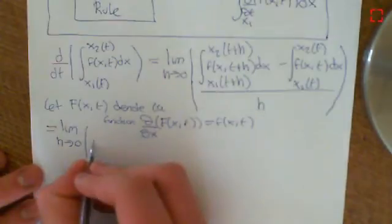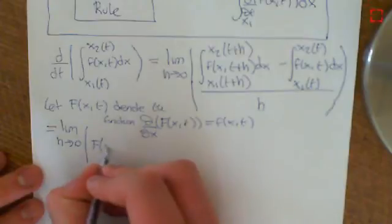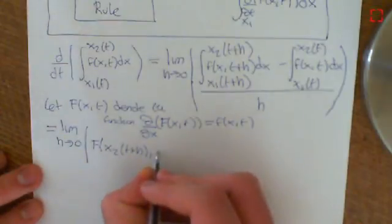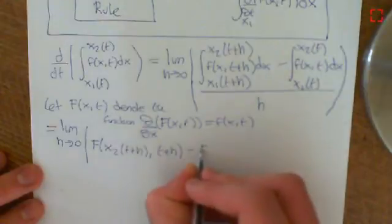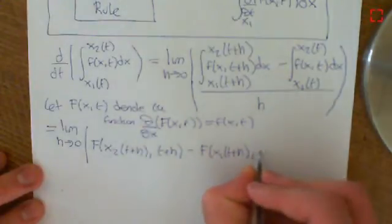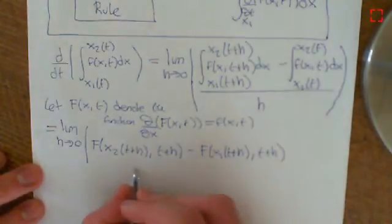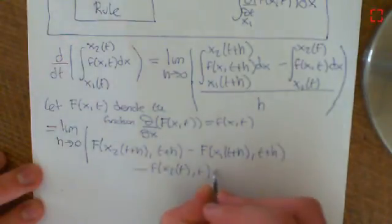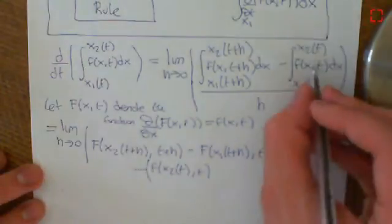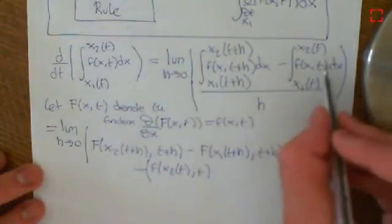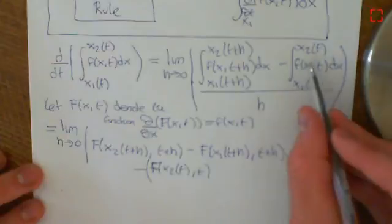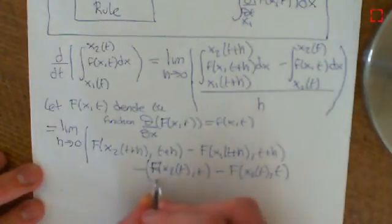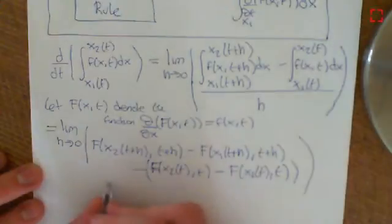From that, the antiderivative of the first integral is big F evaluated at the endpoints: F(x2(t+h), t+h) minus F(x1(t+h), t+h). Then we subtract off the second integral's value, which is big F evaluated at x2(t) minus big F evaluated at x1(t), all at time t — and all of that divided by h.